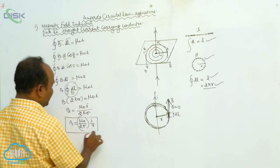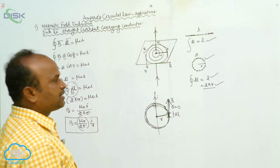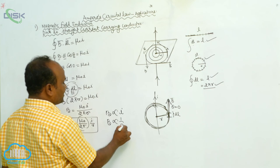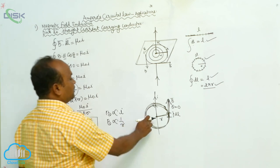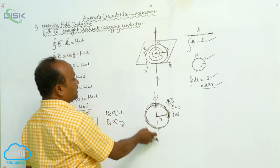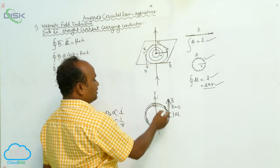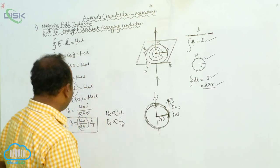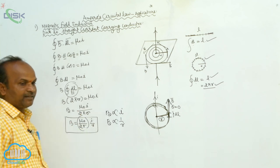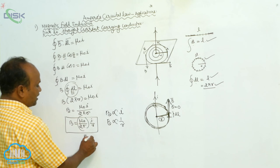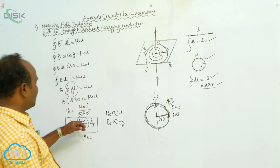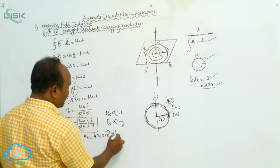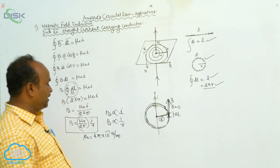This is the magnetic field induction due to a current carrying conductor at a perpendicular distance r: B = μ₀I/2πr, or equivalently B = (μ₀/2π)·(I/r). The magnetic field induction is directly proportional to the current I and inversely proportional to the perpendicular distance r. Here μ₀ is the permeability of air or vacuum, equal to 4π × 10⁻⁷ Henry per meter.